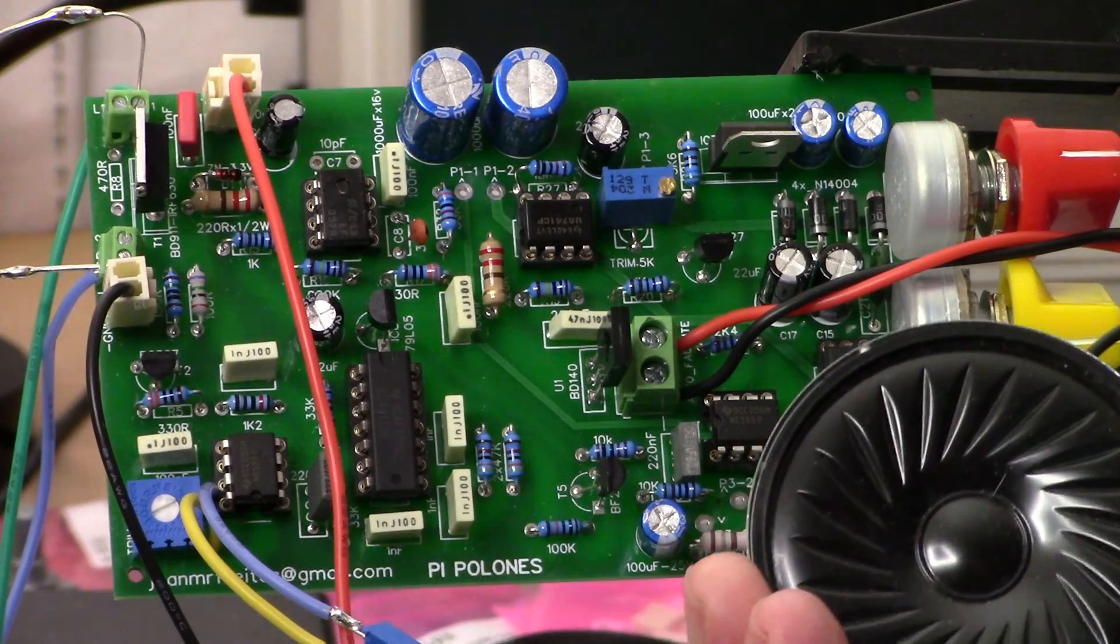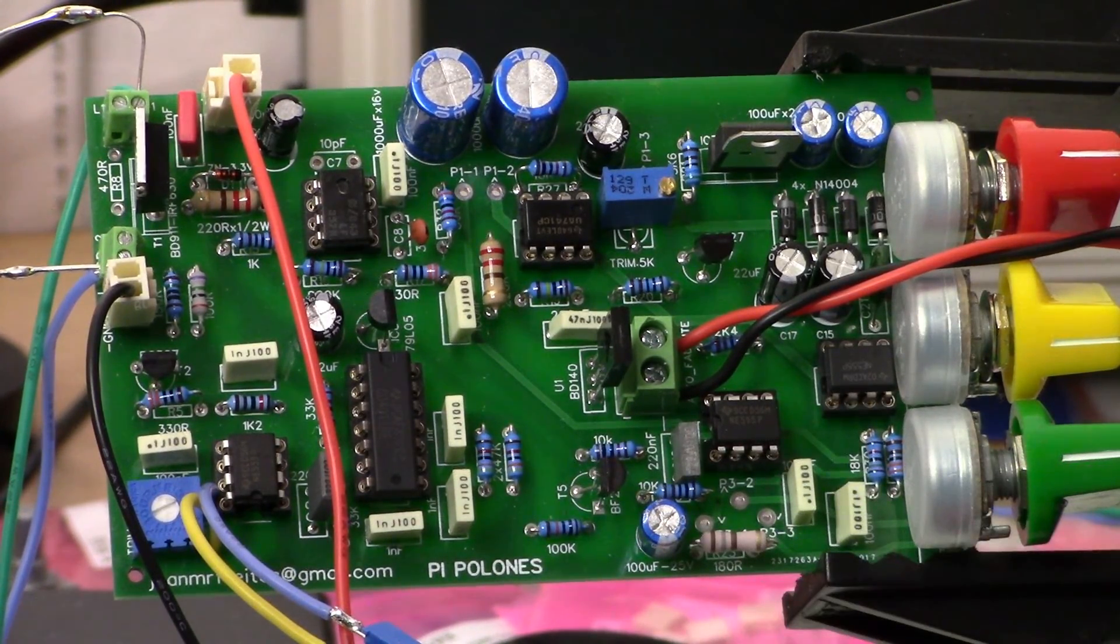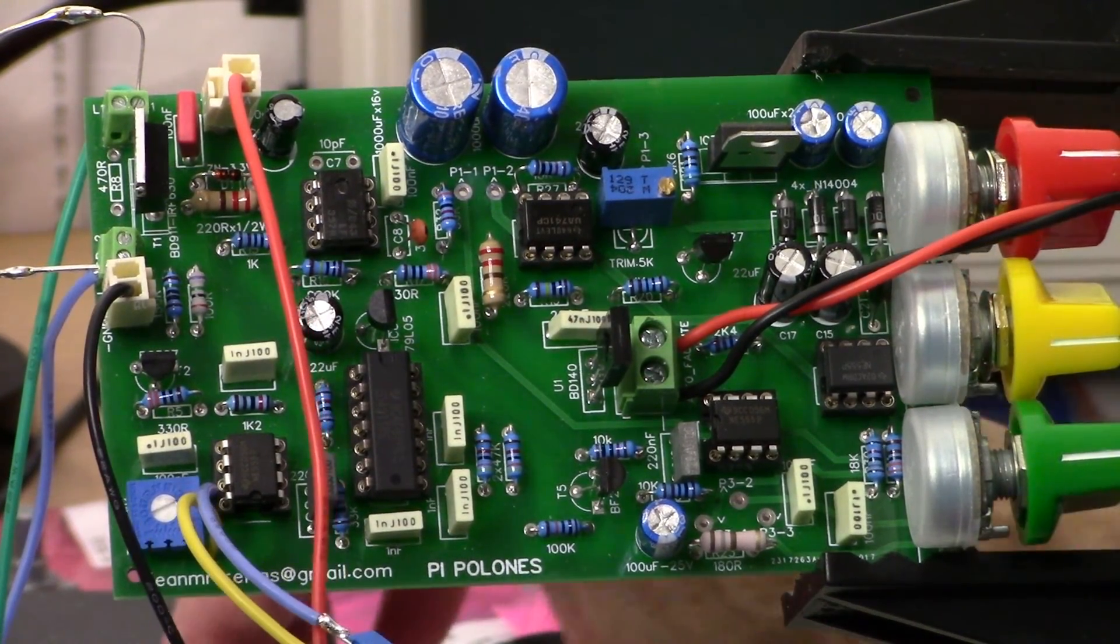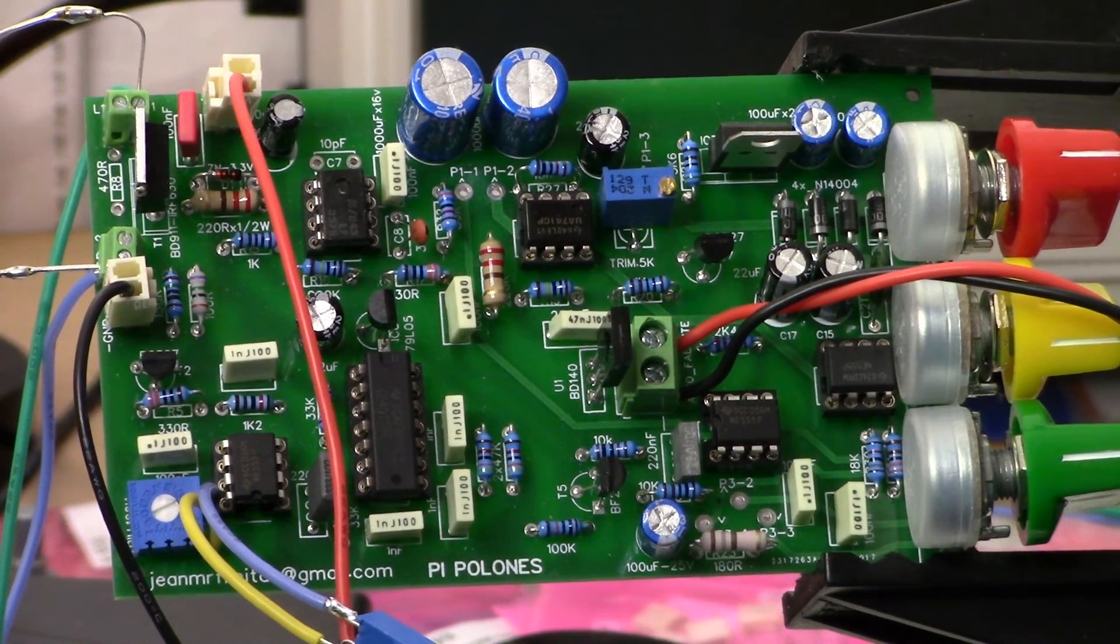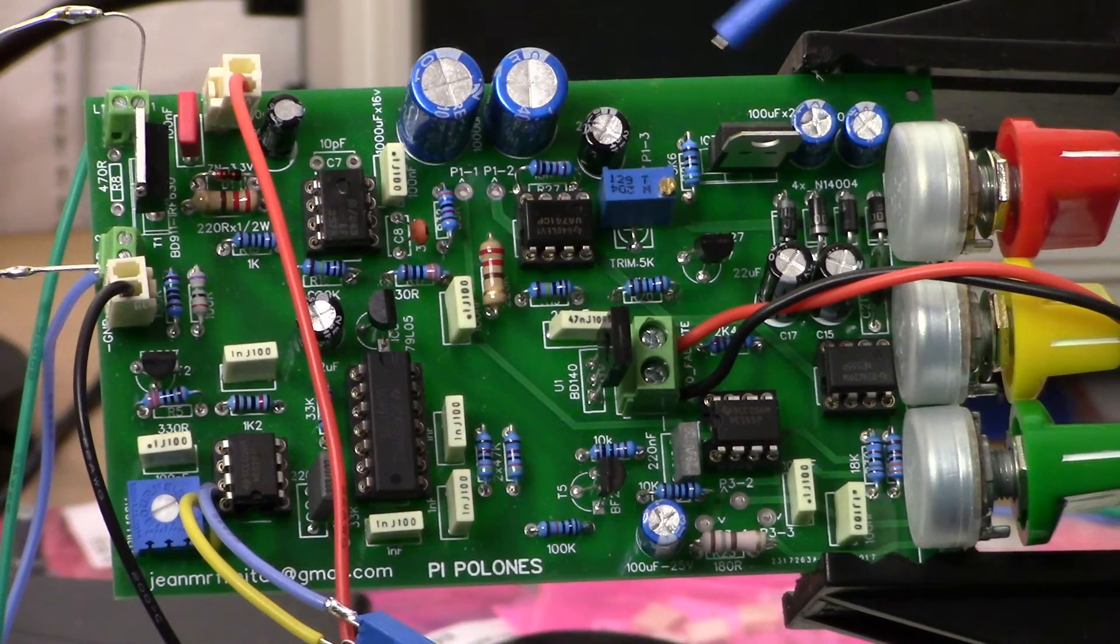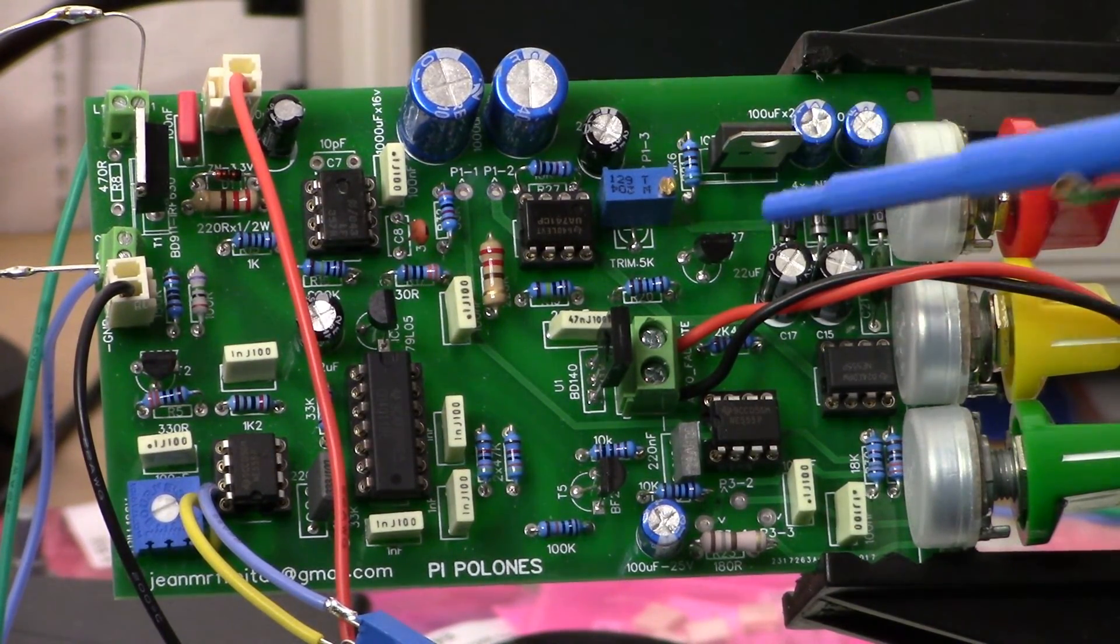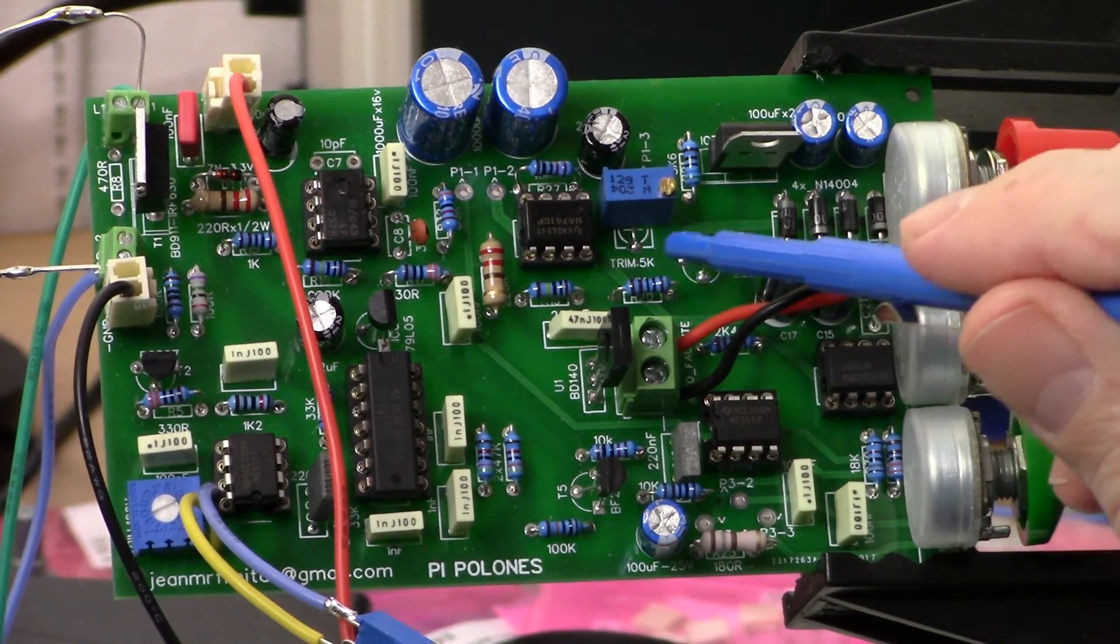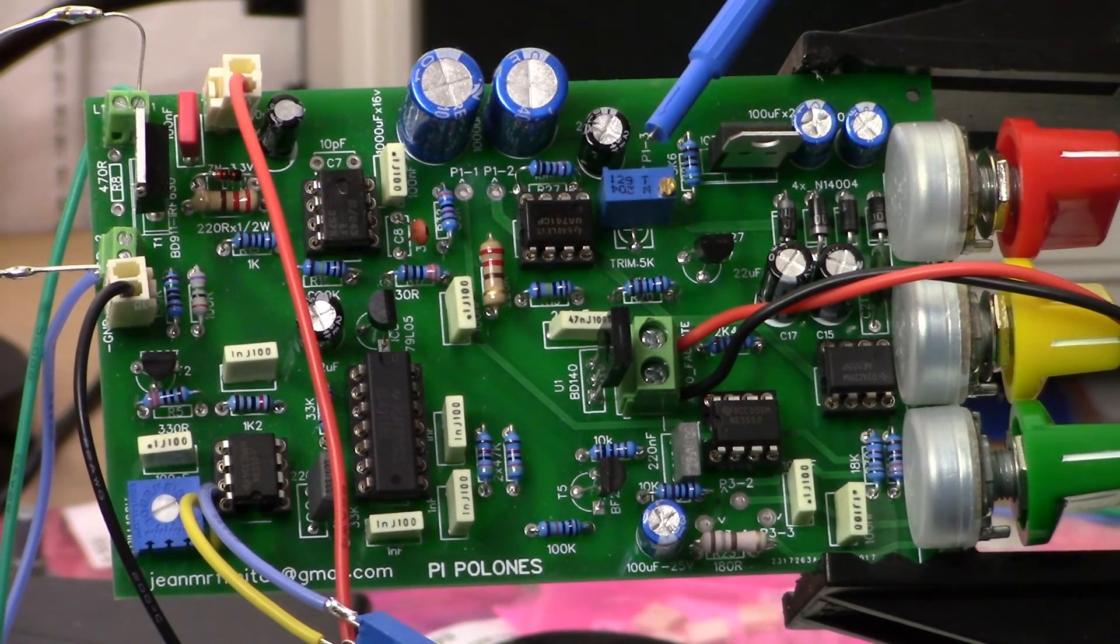Let's shut the power off. A couple things that I wanted to point out: this trim pot here is shown on the printed circuit board as being a 5k, I have a 2k in here.